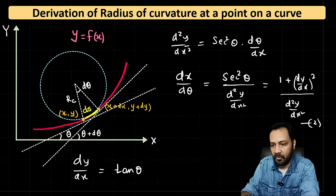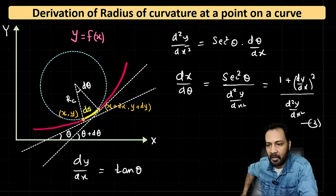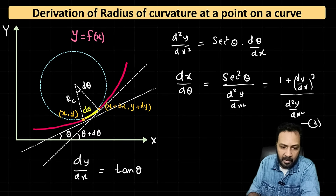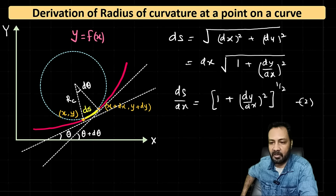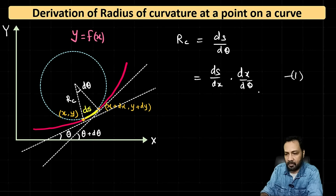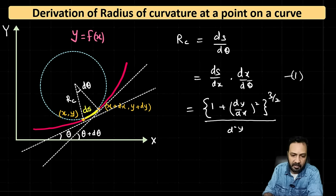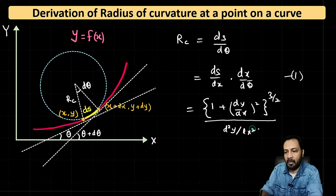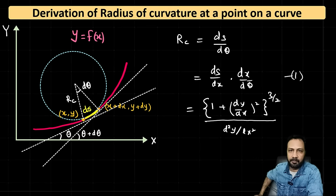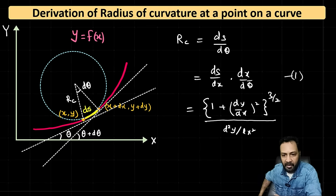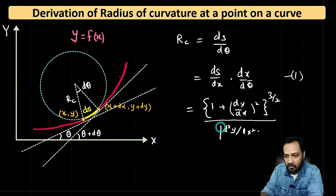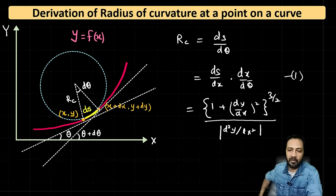Now combining equations 2 and 3 into rc = (ds/dx) · (dx/dθ): substituting gives rc = [1 + (dy/dx)²]^(1/2) · [1 + (dy/dx)²] / (d²y/dx²) = [1 + (dy/dx)²]^(3/2) / (d²y/dx²). To ensure a positive value, we take the absolute value, giving the final expression for the radius of curvature at a point on a curve: rc = |[1 + (dy/dx)²]^(3/2) / (d²y/dx²)|. Thank you.